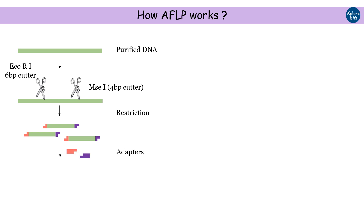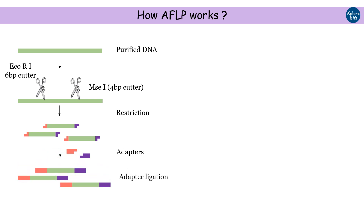Restriction is followed by adapter ligation. Adapters are double-stranded short oligonucleotide sequences of usually 14 to 20 base pairs. Two different adapters are used — one for EcoRI and another for MseI. These adapters of known sequences serve as the target for PCR amplification in the later steps.